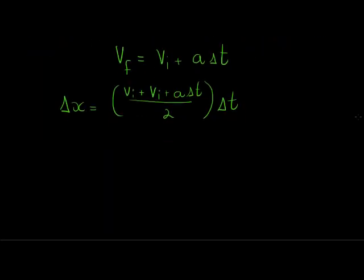And now when we simplify, we get this beautiful equation that delta x is equal to, we get vi plus vi is 2vi. 2vi plus a delta t. Both of these terms in the numerator get divided by 2, so divided by 2, divided by 2, and both of them get multiplied by delta t.